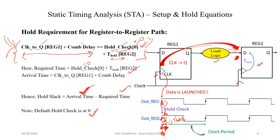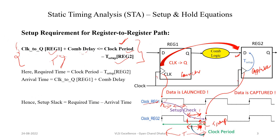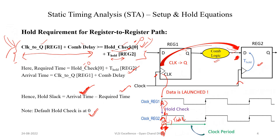The performance of a circuit — meaning at what frequency the design will work — basically depends on the setup equation. To determine the maximum operating frequency, we use the setup requirement equation: time period should be greater than clock-to-Q delay plus combinational delay plus T_setup. We will cover the maximum clock frequency of a circuit in one of the next chapters.